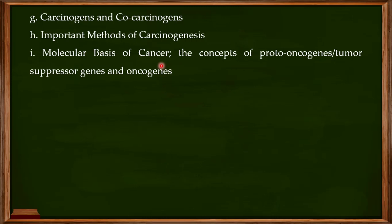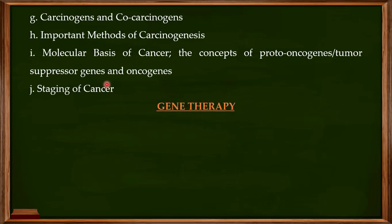We'll then focus in detail on the molecular basis of cancer. Our main focus will be on the concept of proto-oncogenes, tumor suppressor genes, and oncogenes — how these genes are responsible for normal cell division, and what happens when problems occur in these genes. At the end of the cancer section, we'll focus on the staging of cancer, covering the scientific explanation of the different stages such as stage one, stage two, and so on.